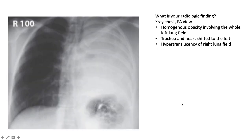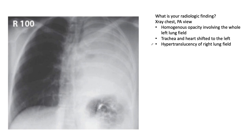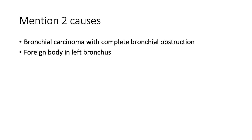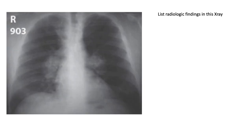This film shows homogenous opacification involving the whole left lung field — whiteout of the left lung. The trachea and heart are shifted to the left, and there is compensatory hyperinflation of the right lung. This speaks to collapse of the left lung; two causes are bronchial carcinoma with complete bronchial obstruction or a foreign body in the left bronchus. If the patient is intubated, it could also be a mucus plug. Investigate with CT chest and bronchoscopy.